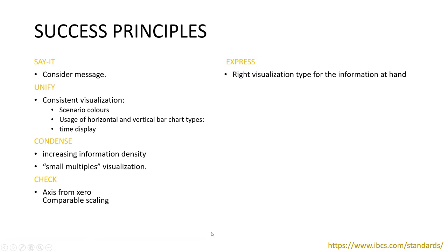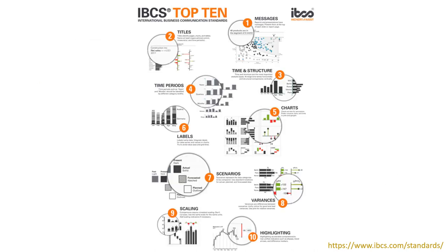'Express' is the principle of using the right visualization type for the information at hand — using bar charts with consistent time structure, being consistent with colors (black is always solid, forecast is hatched). One thing all information design experts typically suggest is not to use pie charts. With a pie chart, you make it much harder for the user to compare information — it's very hard to compare a slice of a pie versus a bar chart where you can exactly tell which one is lower. With bar charts you can also sort from highest to lowest, which is immediately clear.